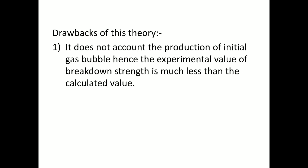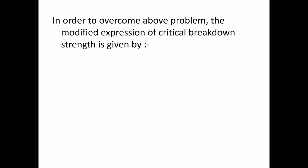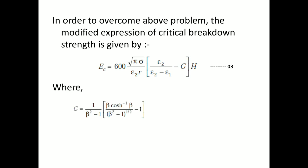Let us discuss the drawbacks of the cavity breakdown mechanism. The first drawback is that this theory does not account for the production of the initial gas bubble, because of which the experimental value of breakdown strength is much less compared to the calculated value. The second drawback is that this mechanism assumes the gas bubble will elongate in length keeping the overall volume constant, but this is practical only for water bubbles by applying the simple gas law PV = RT. To overcome these problems, the modified expression of critical breakdown strength according to cavity breakdown mechanism is given by equation number 3, where capital G and capital H are additional terms defined by their respective expressions.